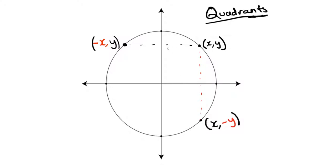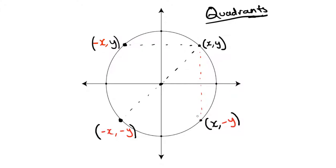You don't even need to think of these as points on a circle — just think of them as regular coordinates, like in algebra or geometry. Now lastly, if you reflect over the origin, which is in essence flipping it over both the x-axis and the y-axis at the same time, then both x and y become negative, giving you negative x comma negative y.